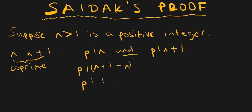But n plus one minus n is just one, so that tells us that p divides one. But the only positive integer which divides one is one, so p must be equal to one. And if p equals one, that means the highest common factor of n and n plus one must be one.